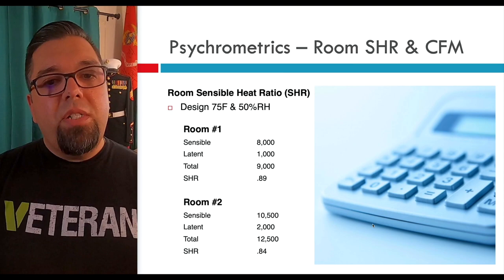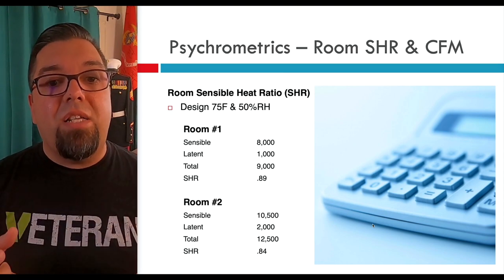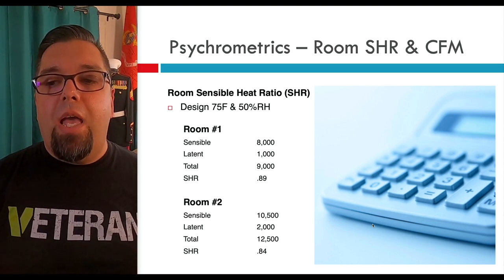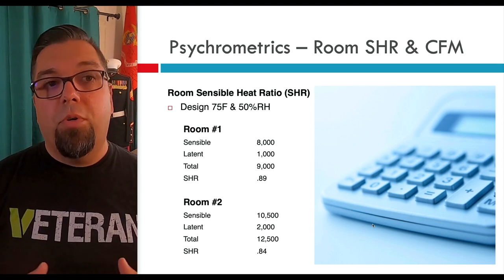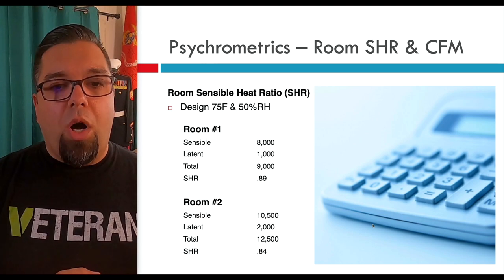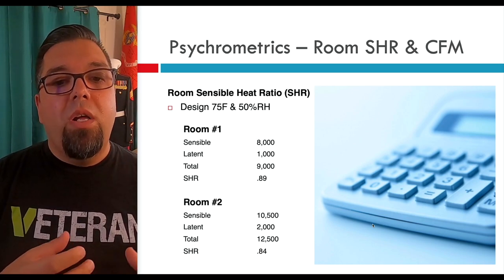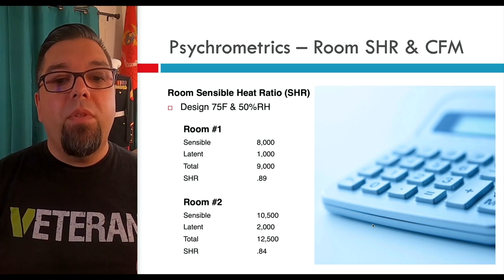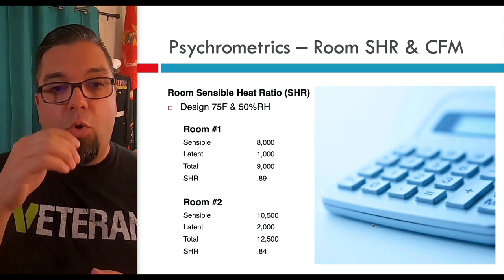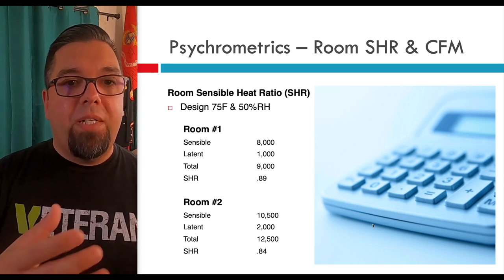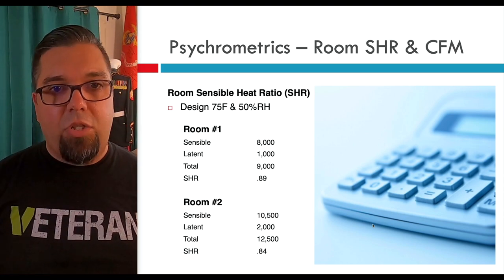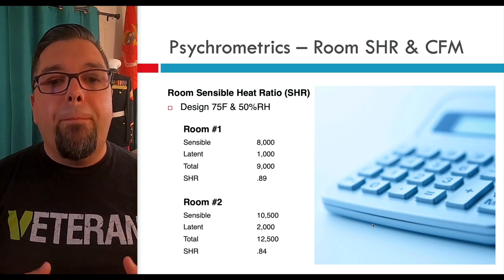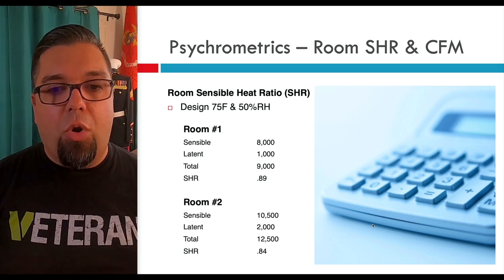So let's talk about the room sensible heat ratio. We're going to take our design temperature of 75 degrees and 50% relative humidity. If I was to print off a Manual J load calculation room by room, in this first example, room number one had 8,000 BTUs per hour sensible gains and 1,000 BTUs per hour latent gains. Adding those up, it's 9,000 BTUs total for room number one. To get the sensible heat ratio — the ratio of sensible versus total — you divide the two: 8,000 divided by 9,000, and we end up with 0.89.